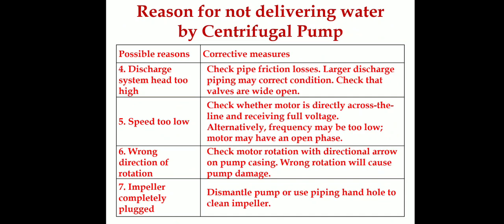The fifth cause is speed too low. The electricity supply may have fluctuations in voltage, current, and frequency, causing speed variation in the motor. We have to ensure proper voltage and current regulation to maintain correct pump speed and water delivery.